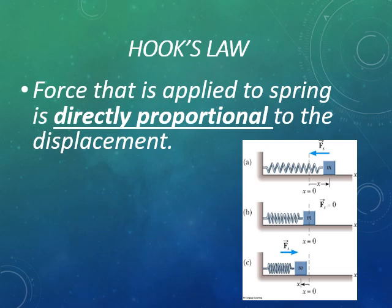Before discussing the example of simple harmonic motion, let's recall Hooke's law that we studied in class 9th. A force that is applied to a spring is directly proportional to the displacement — that is, F is directly proportional to x. If we increase the force, displacement also increases; if we decrease the force, displacement also decreases. When we remove the proportional sign we apply a constant, and that constant is called K.